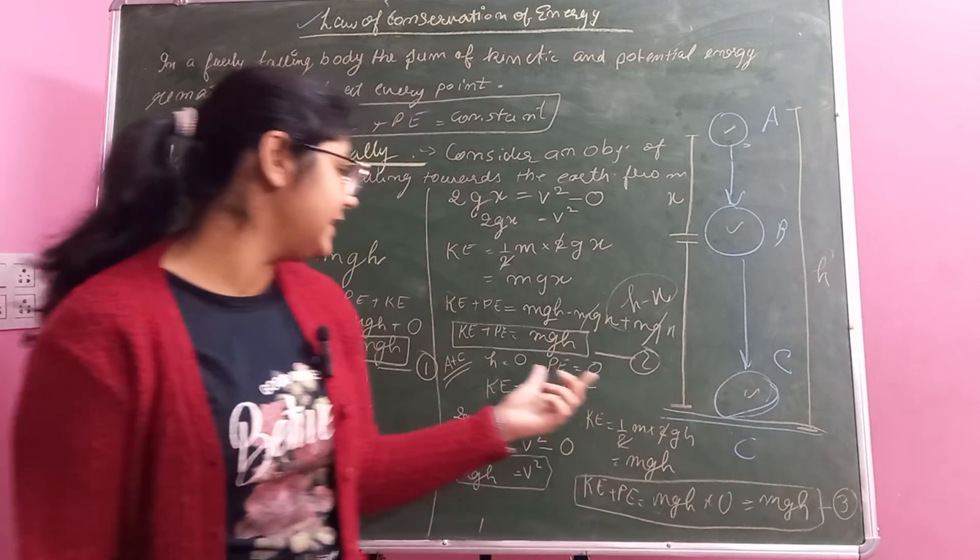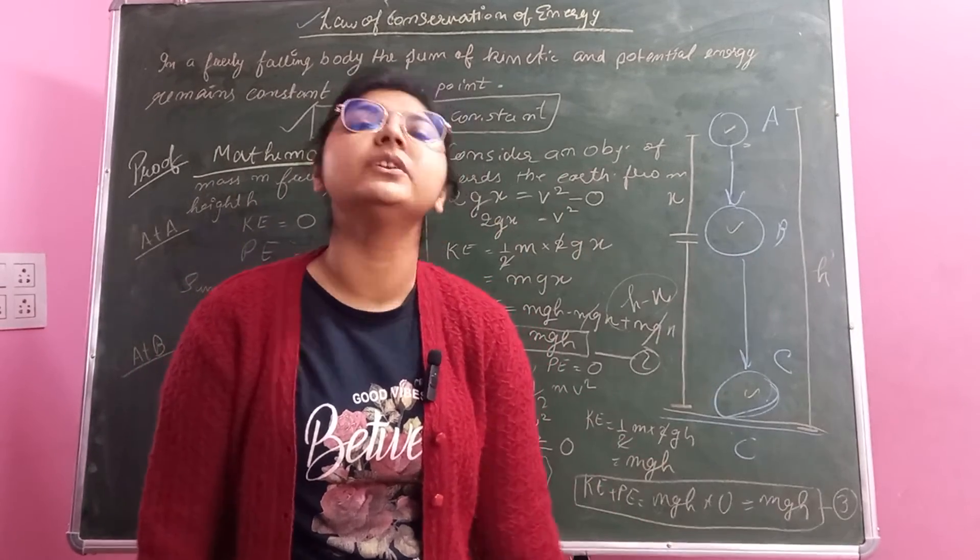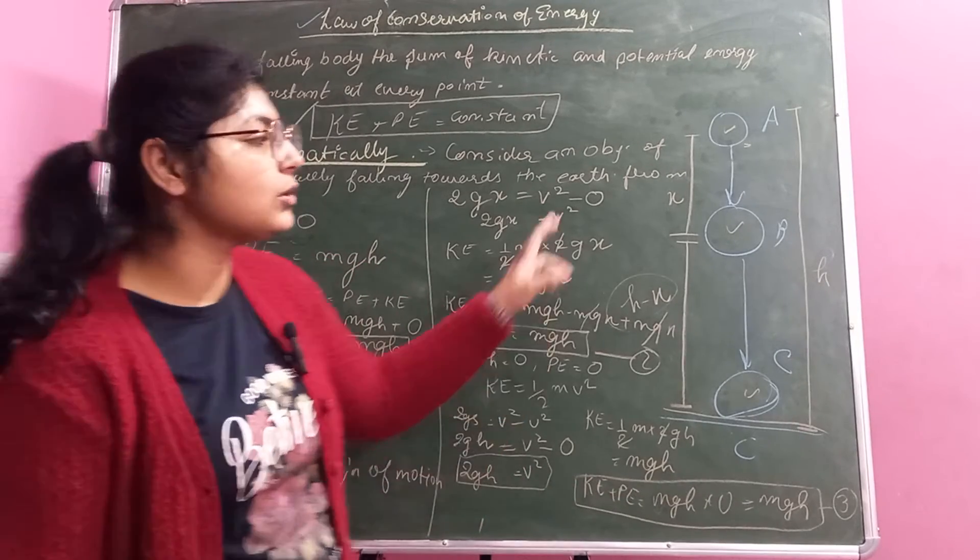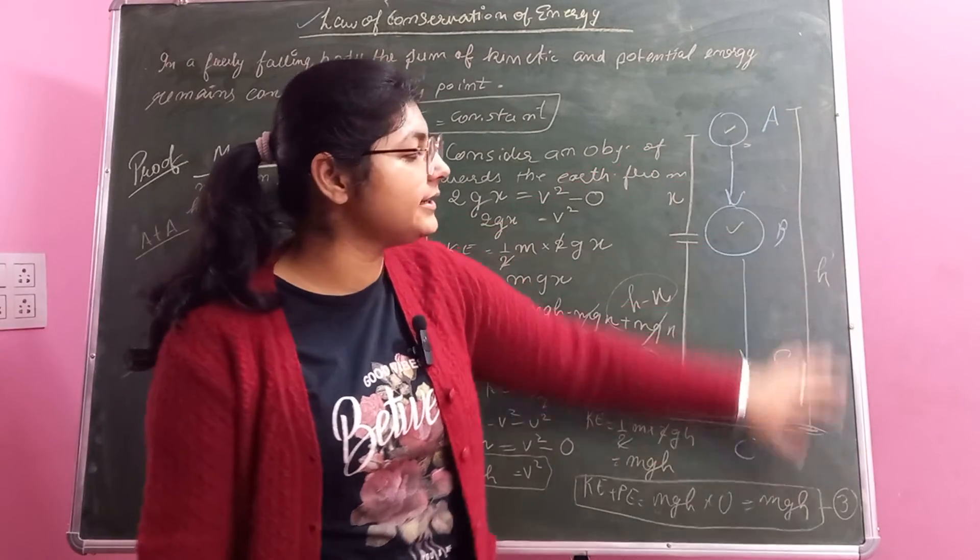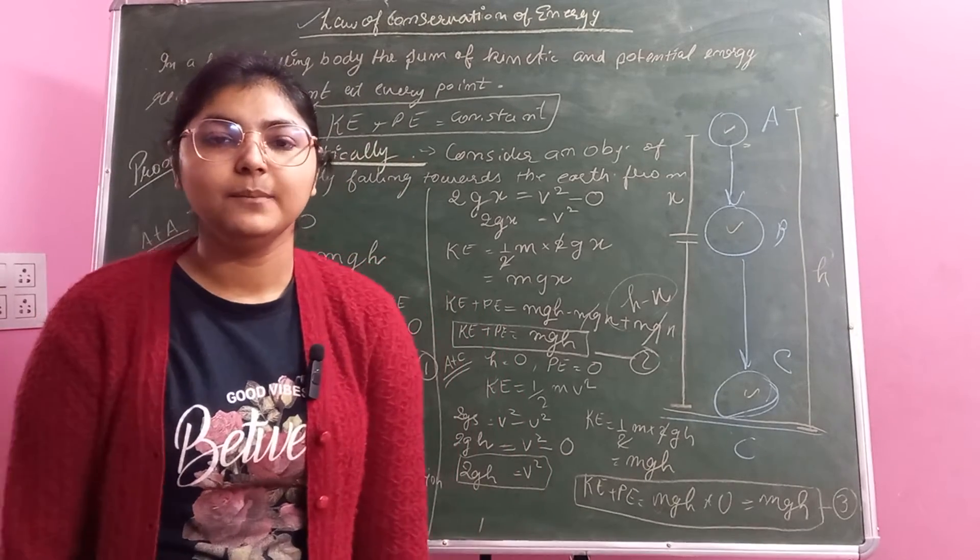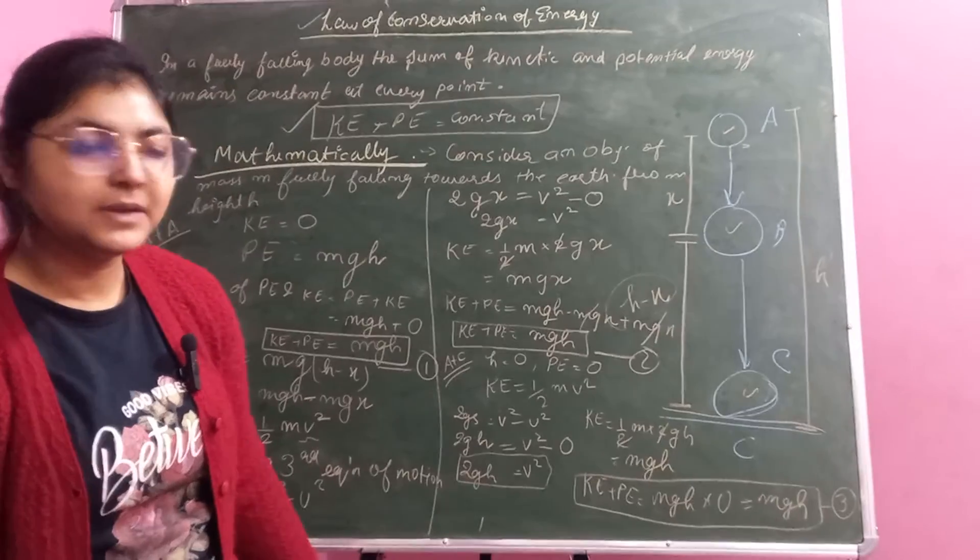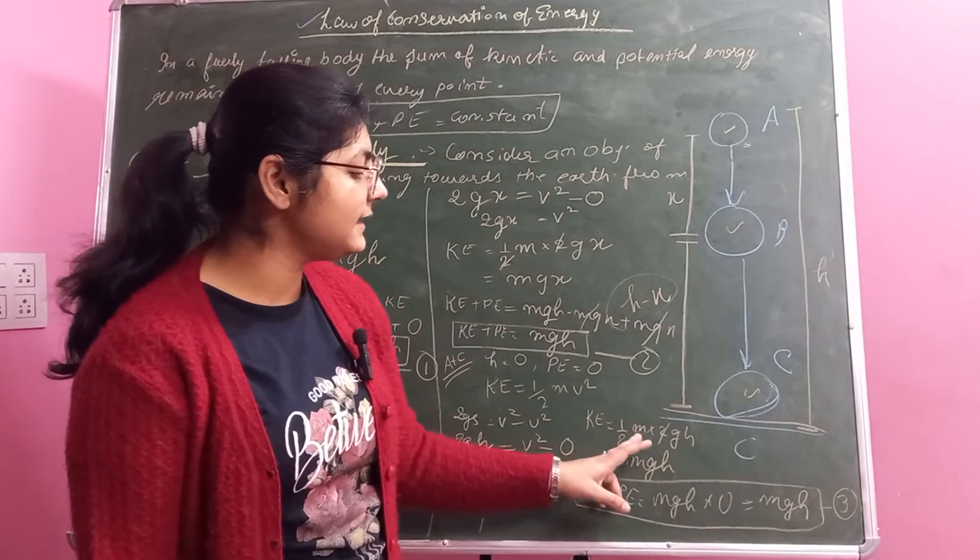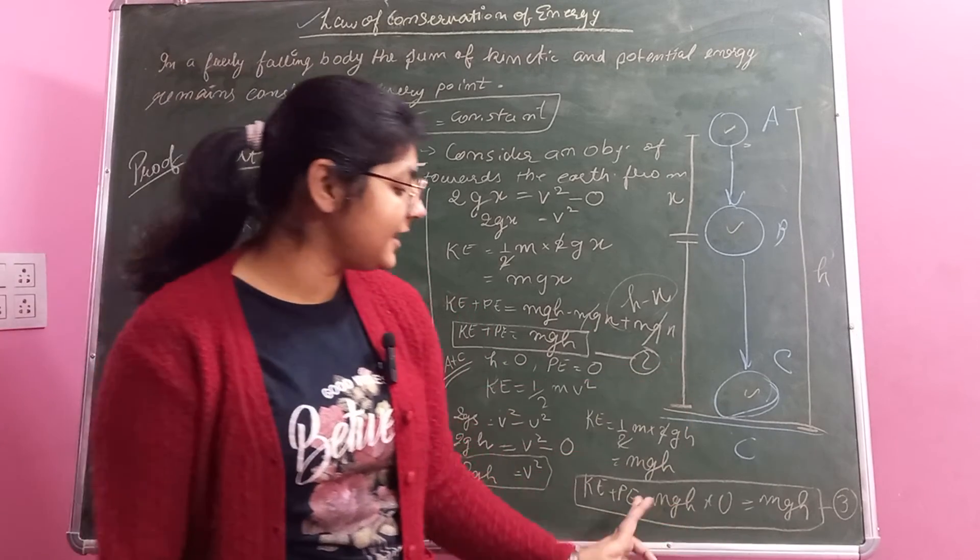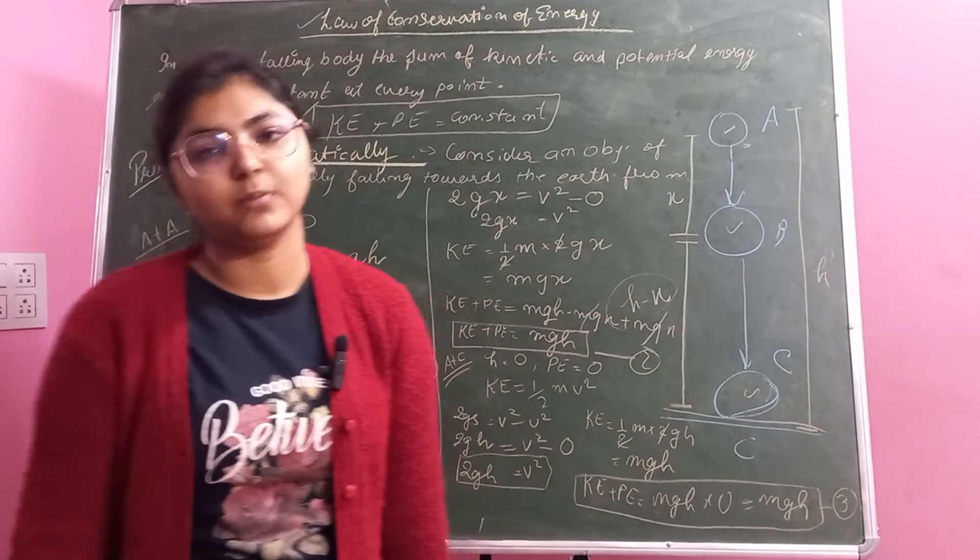Similarly at C, kinetic energy is half mv square. We do not have the value of v, so we calculate it with the help of third equation of motion: 2gs equals v square minus u square. What is s here? It is the total distance covered by ball before coming to point C, which is h. So 2gh equals v square. U is zero because the ball is coming from upward direction. We get v square as 2gh. When we put it in kinetic energy, the 2s get cancelled and the value remains mgh. Since at C there is no height, potential energy is zero. We added and got mgh. So we can say that energy remains conserved in a freely falling body.